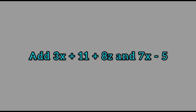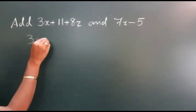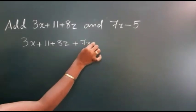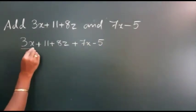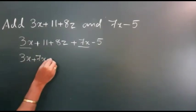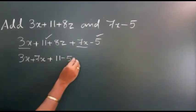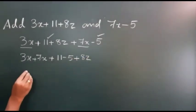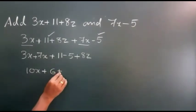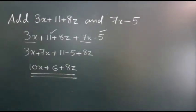Second example: add 3x plus 11 plus 8z and 7x minus 5. We write 3x plus 11 plus 7x minus 5. Take the like terms: 3x plus 7x, and plus 11 minus 5. One term is remaining — write that also: plus 8z. Then add the like terms: 3x plus 7x is 10x, and 11 minus 5 is 6. Write 8z also. So the answer is 10x plus 6 plus 8z.